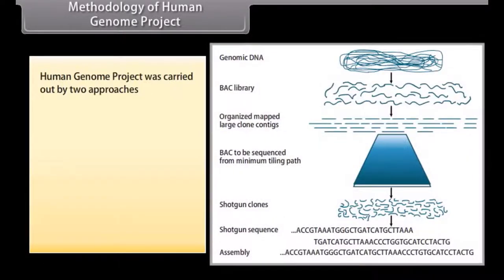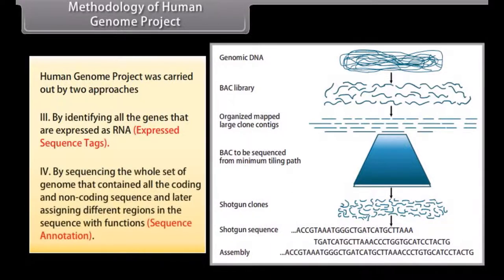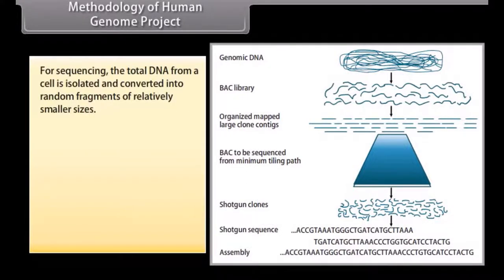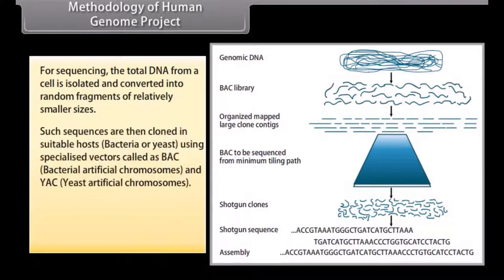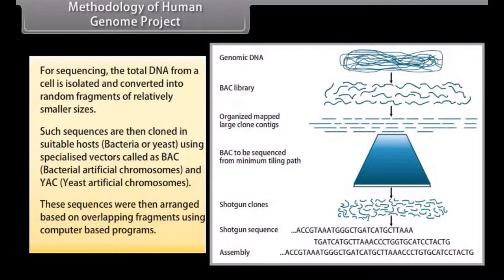The Human Genome Project was carried out by two approaches: by identifying all the genes that are expressed as RNA, called expressed sequence tags; and by sequencing the whole set of genome that contained all the coding and non-coding sequences and later assigning different regions in the sequence with functions. For sequencing, the total DNA from a cell is isolated and converted into random fragments of relatively smaller sizes, then cloned in suitable hosts — bacteria or yeast — using specialized vectors called BAC (bacterial artificial chromosomes) and YAC (yeast artificial chromosomes). These sequences were then arranged based on overlapping fragments using computer-based programs.